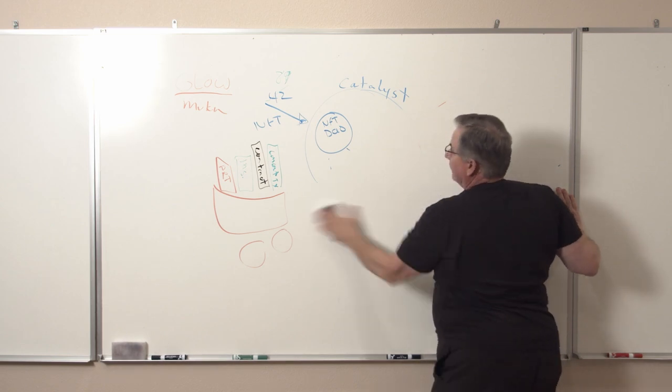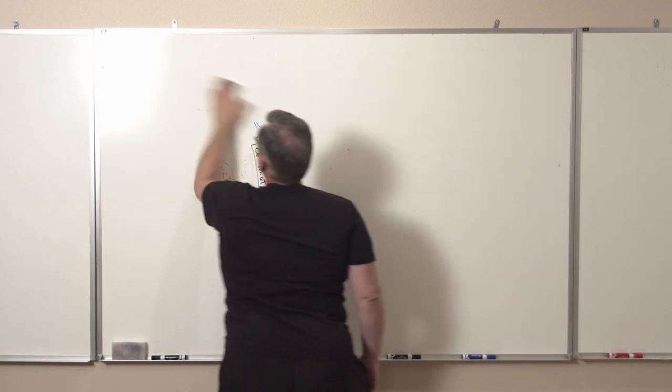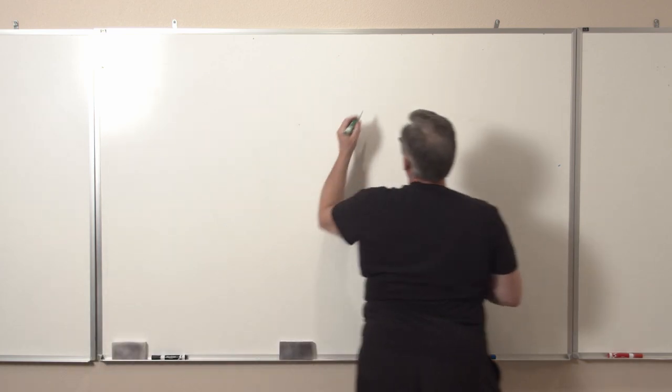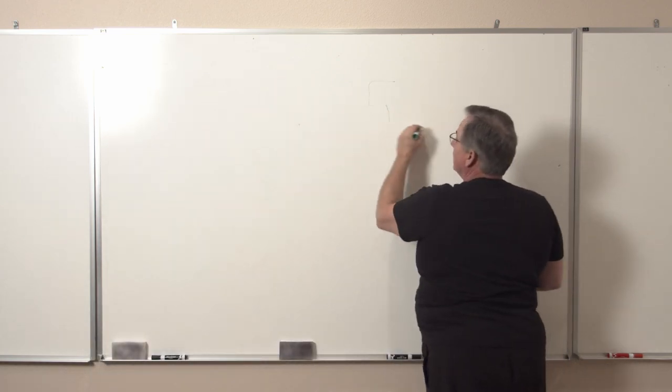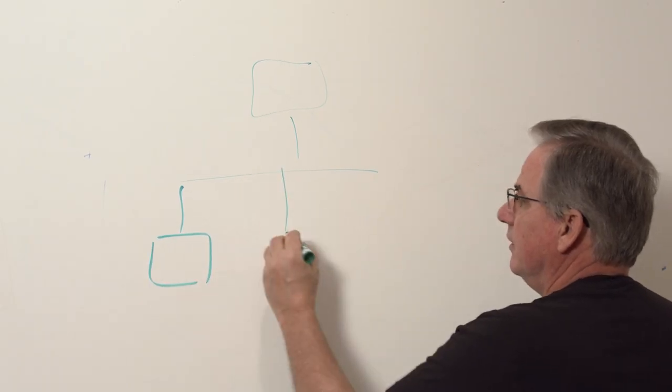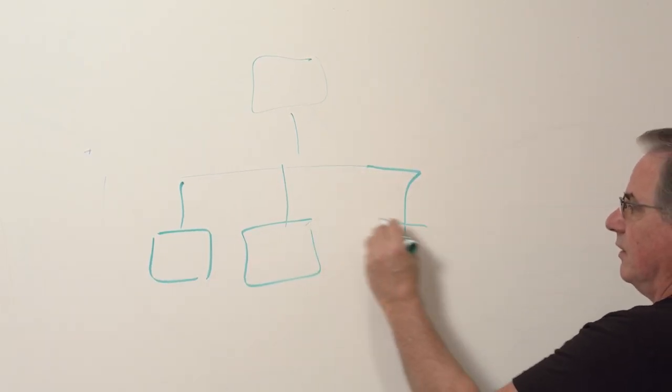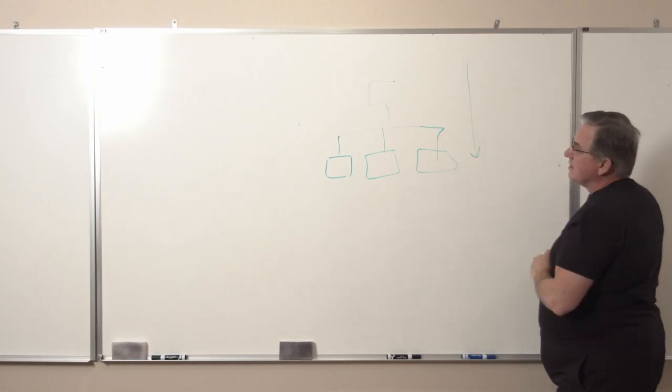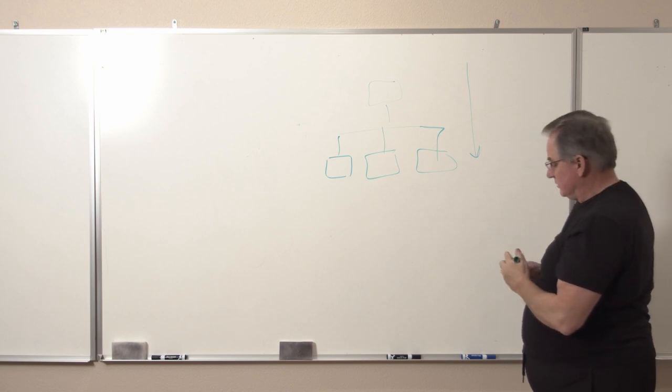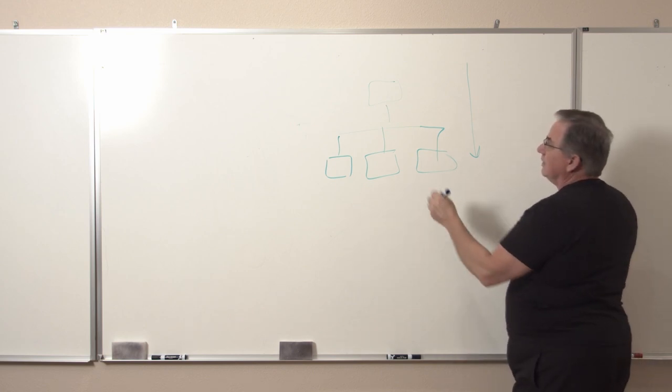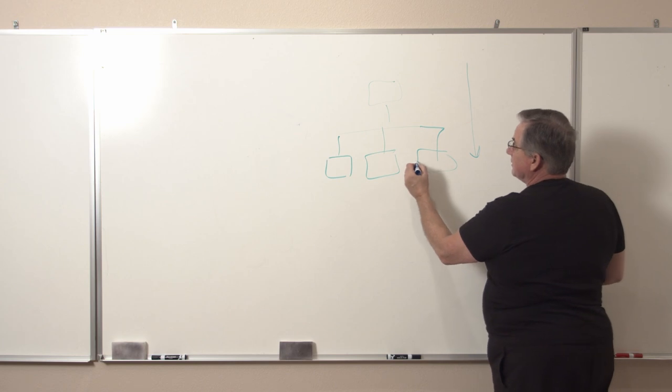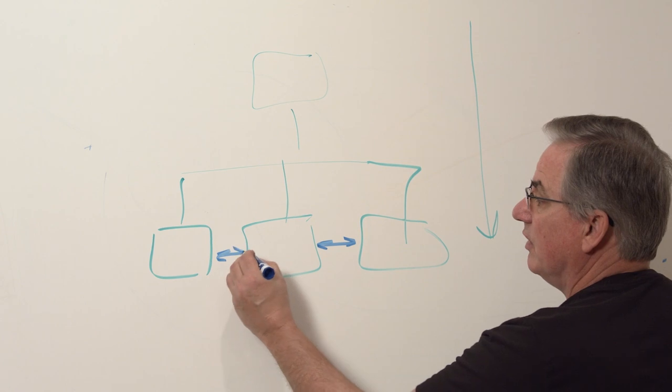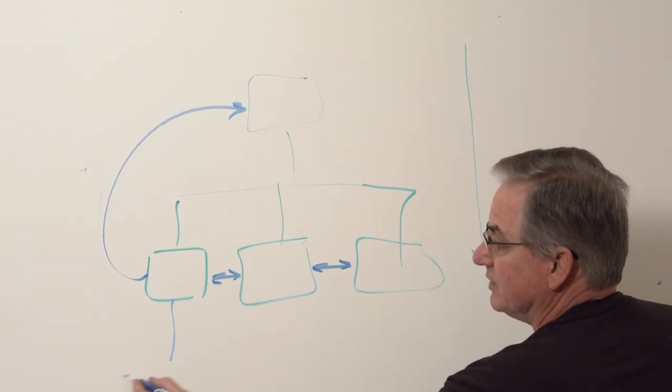We're all familiar with hierarchies. The hierarchy is basically like this and it has a command and control from the top down. Heterarchies are very similar, but there doesn't need to be command and control from the top down. All of these can communicate wherever they are in the system.